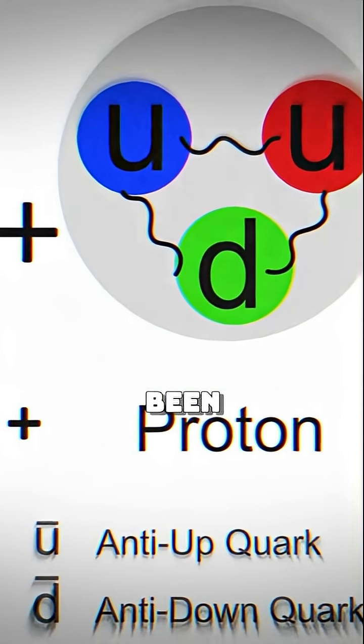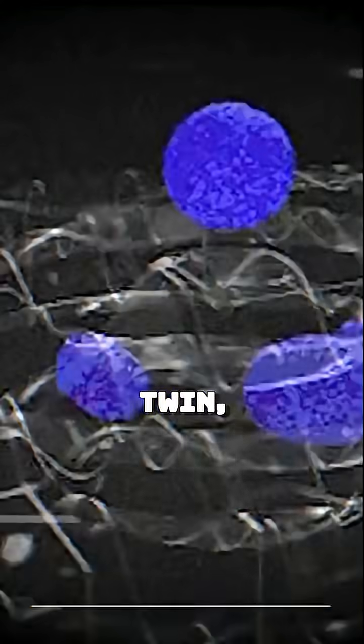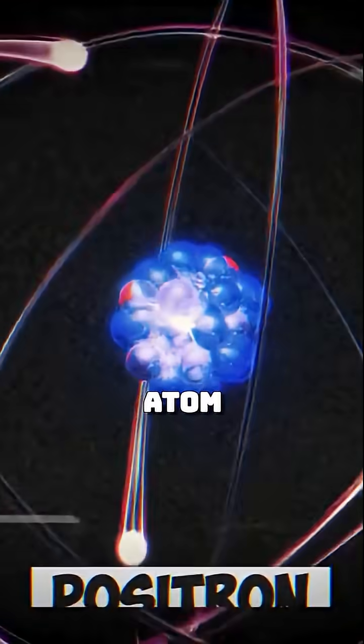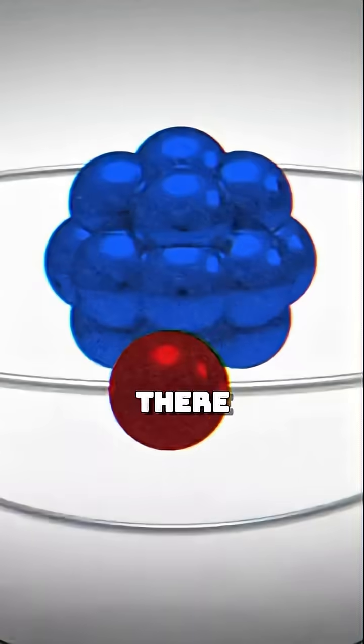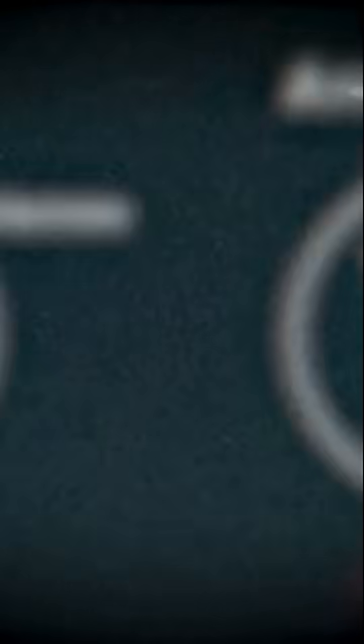For every proton, there should have been an antiproton. For every electron, its shadow twin, the positron. For every atom that might one day become a planet or a person, there should have been its mirror image waiting to cancel it out. And here's the catch.